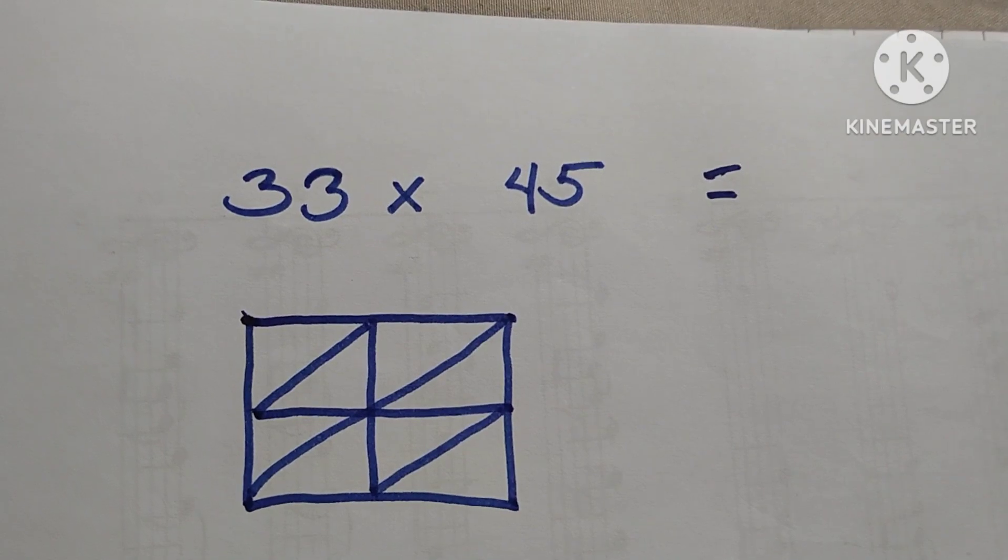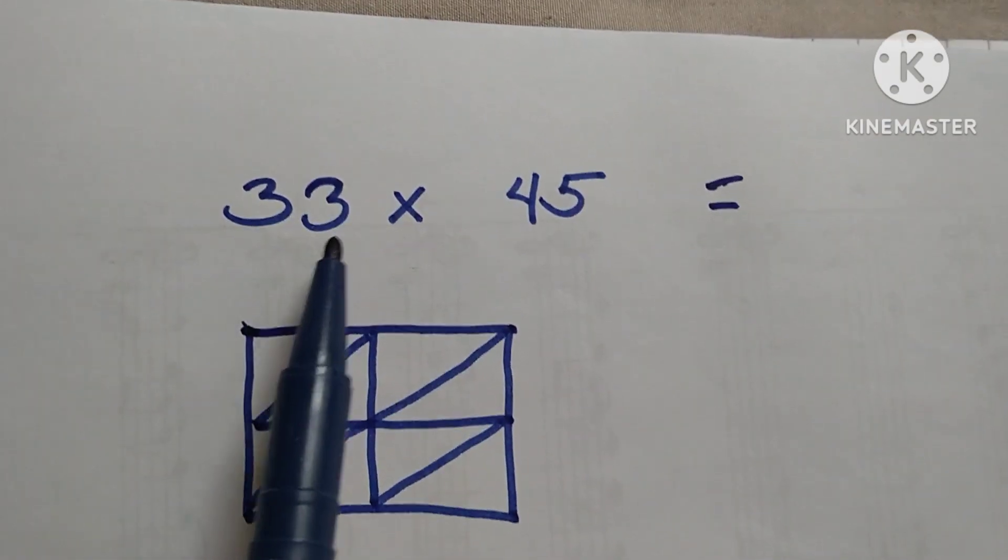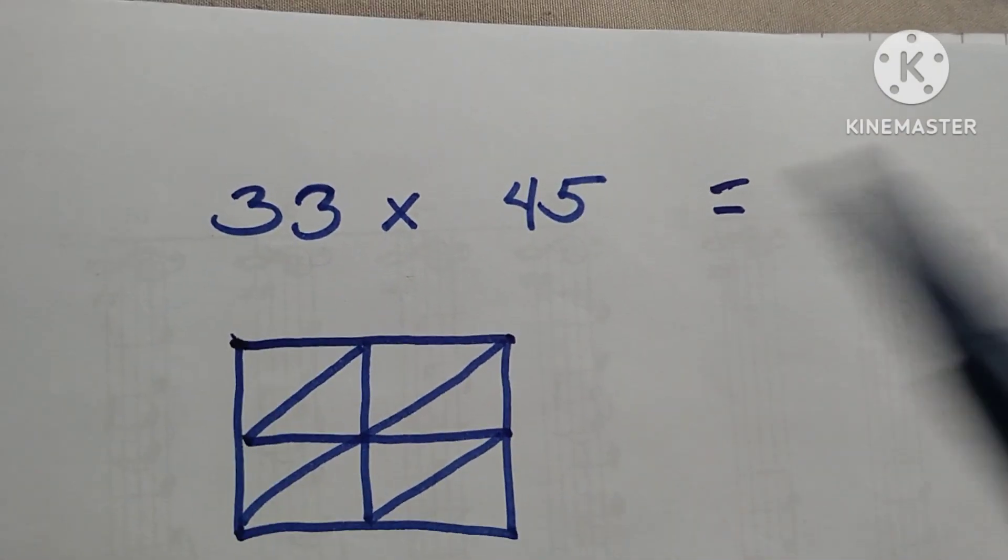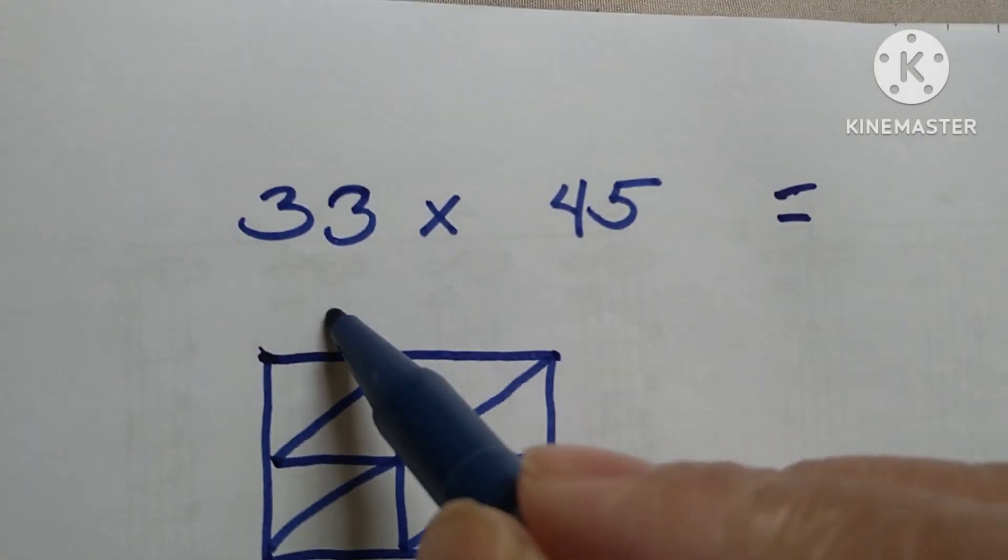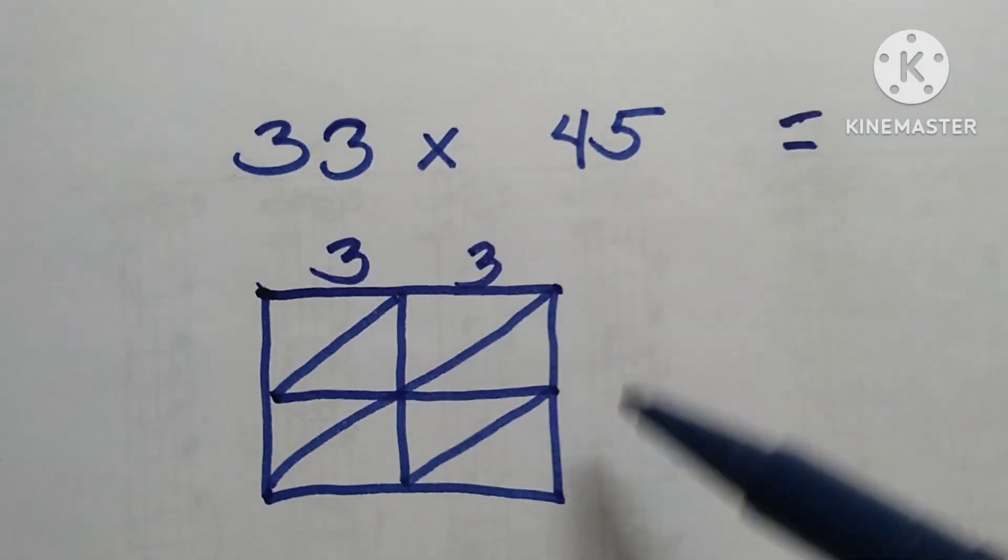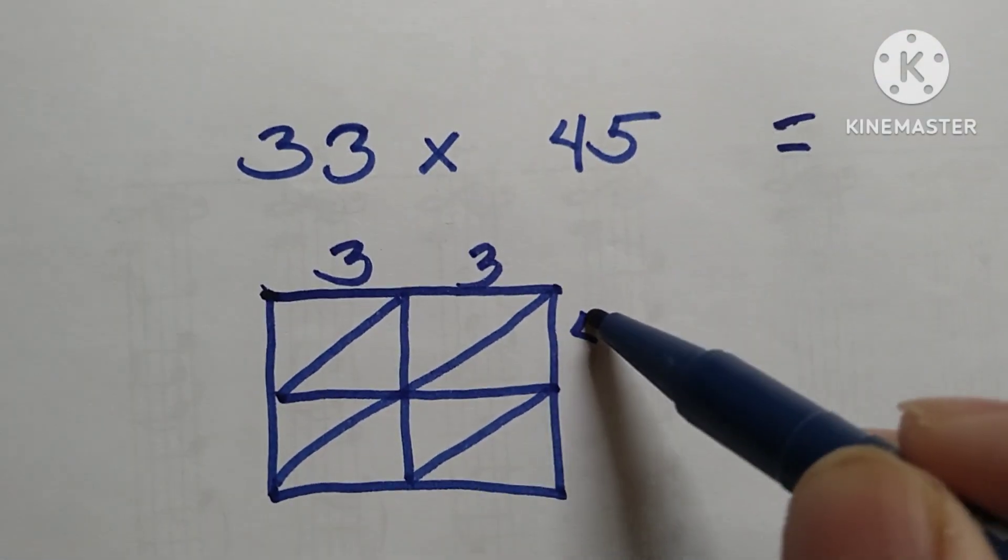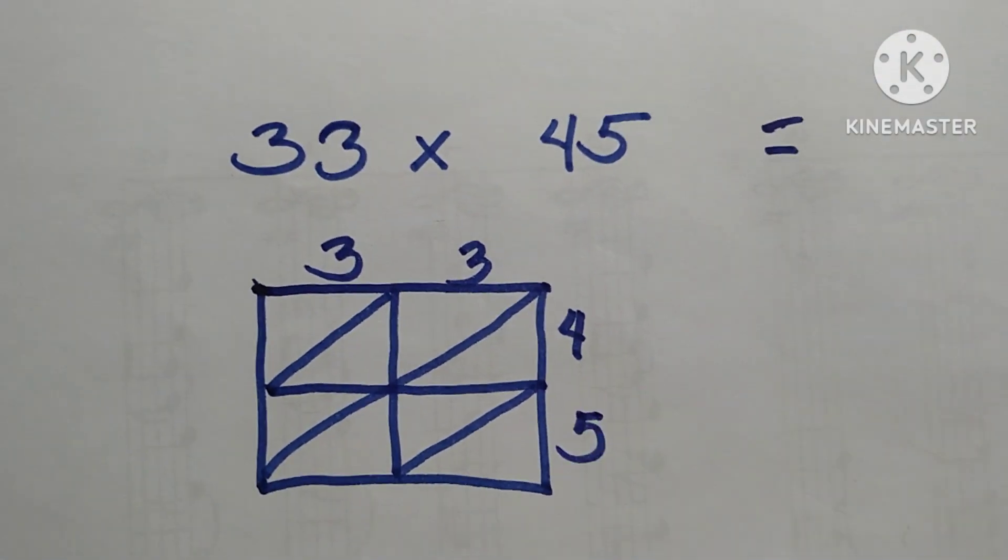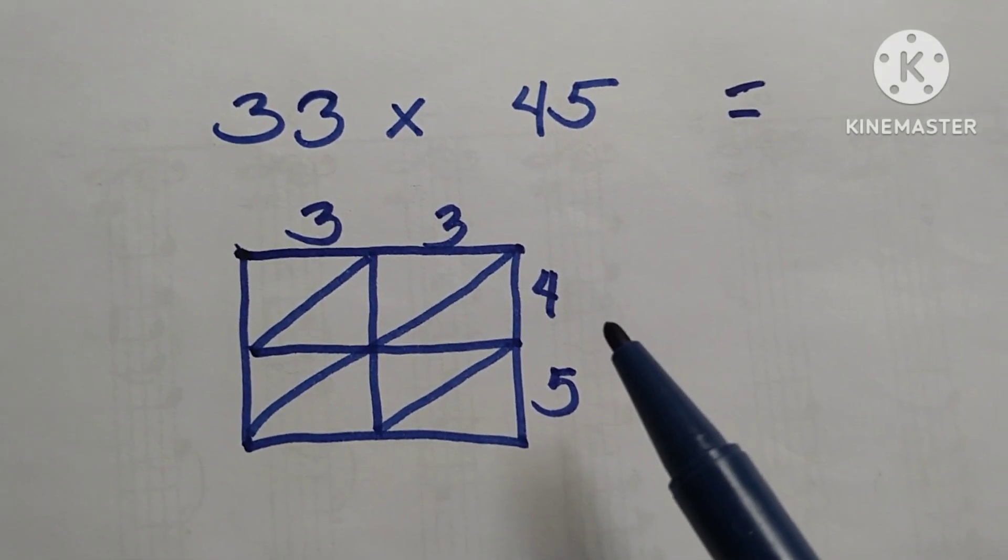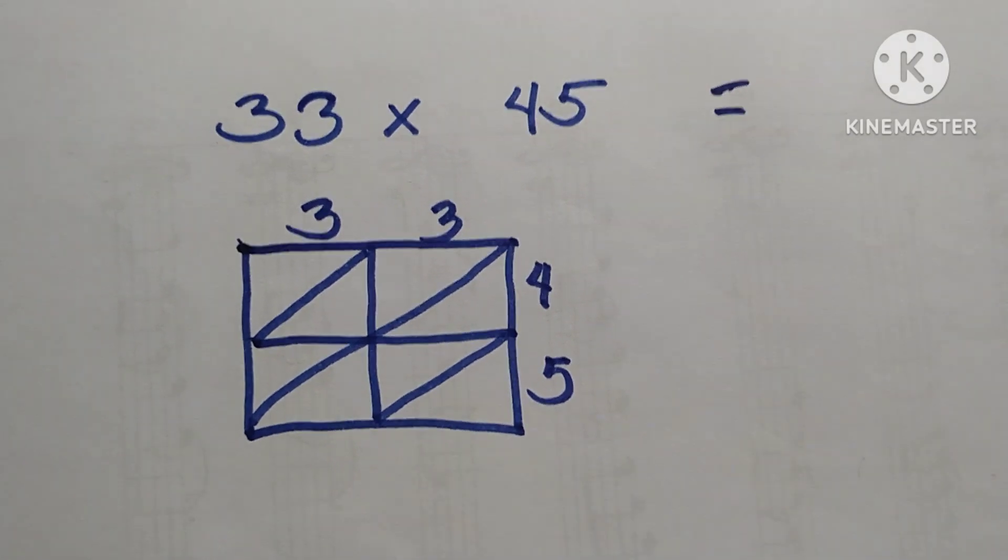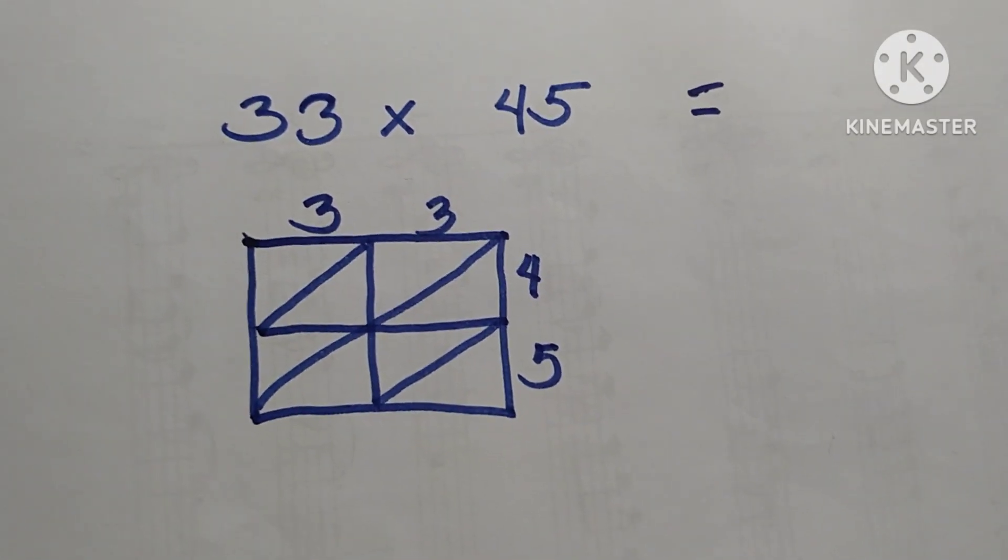Make lines here and here, and then put the first numbers on top of the rows: three, three, and then the other side is four, five. Using this technique, this is a very easy trick—you can mentally compute two-digit numbers within a second.